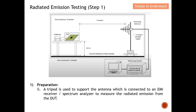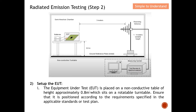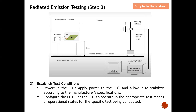Step 2: the EUT is placed on a non-conductive table — this cannot be metallic. Typically a special type of fiber is used as the table surface. The table height is approximately 0.8 meters, and it sits on a rotatable turntable that can turn 360 degrees. Ensure that your EUT is configured according to the requirements specified in the standard or the test plan.